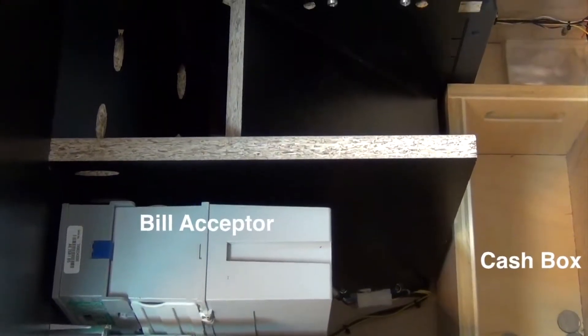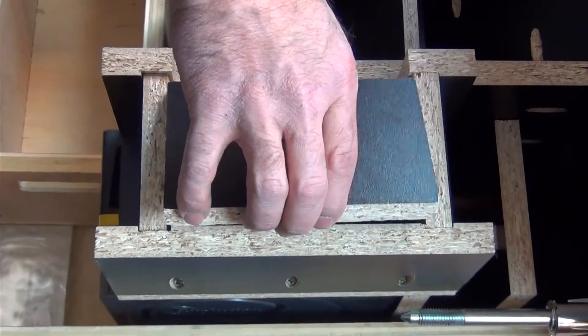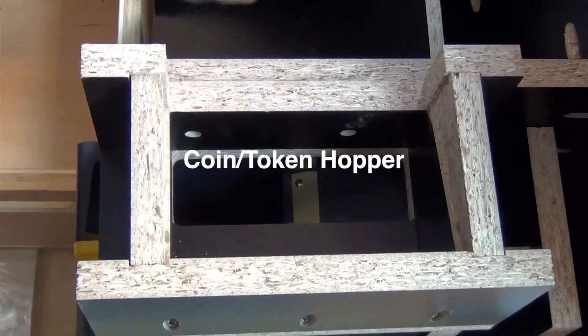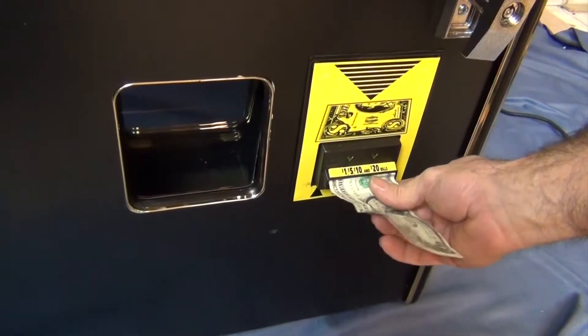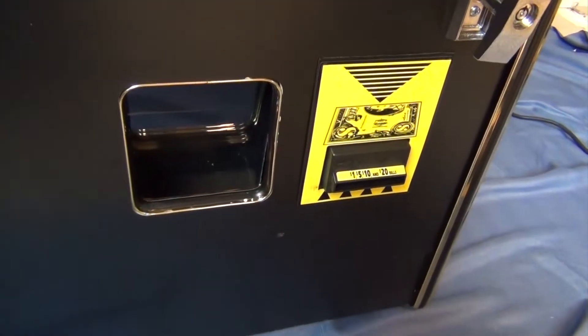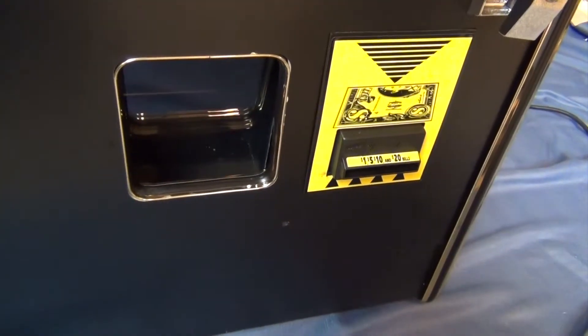The base unit also gives you access to the coin or token hopper. This acts as the machine's internal changer that can dispense tokens or coins, allowing you to run the machine coin-in, coin-out, or token-in, token-out.